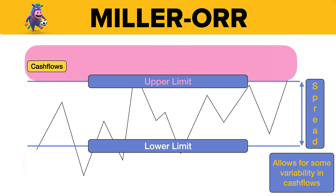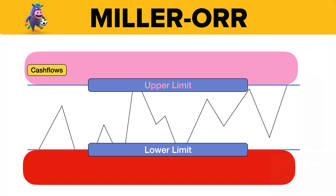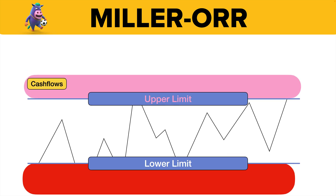At the upper limit, we've got too much cash, so we put it into deposit or we buy shares. At the lower limit, we haven't got enough cash, so we take it out of deposit or we sell shares. Anything in between, we're okay with — it allows for some variability in cash flows.